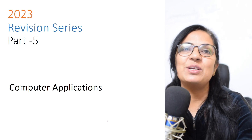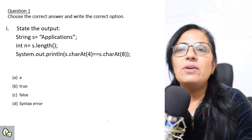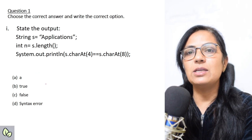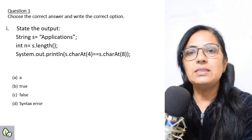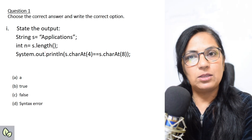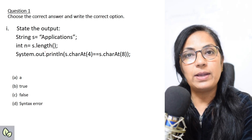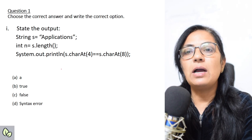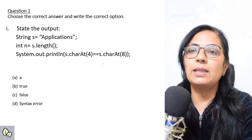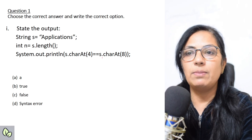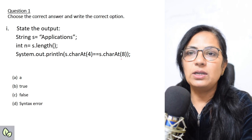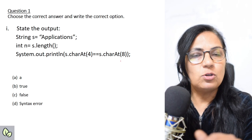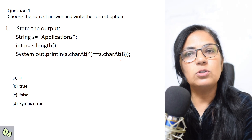We move on to the first question: state the output. String s equals 'applications', int n equals s.length(). System.out.println(s.charAt(4) == s.charAt(8)). The length function is used to find the length of the given string.